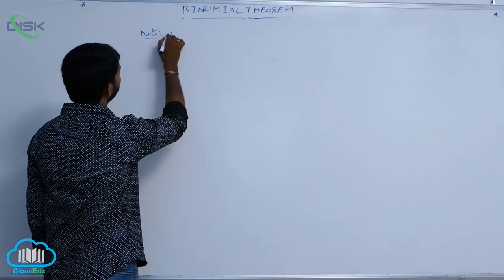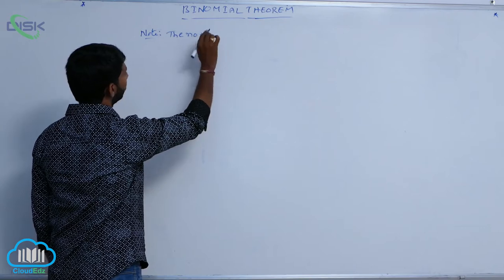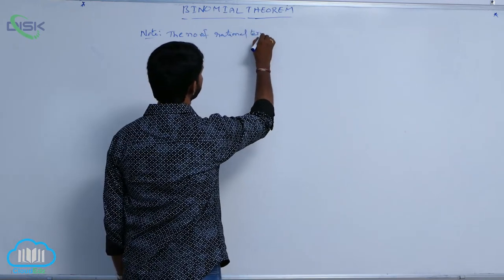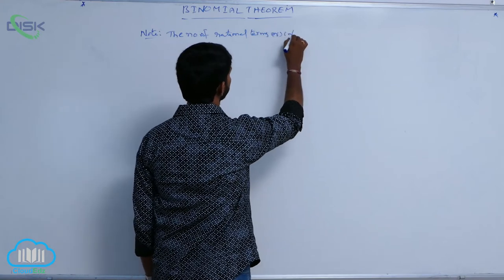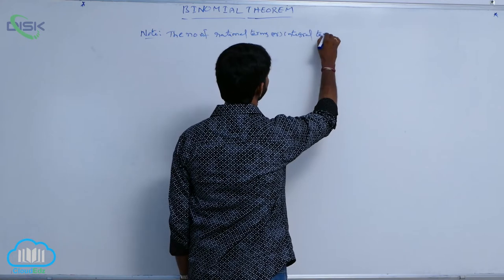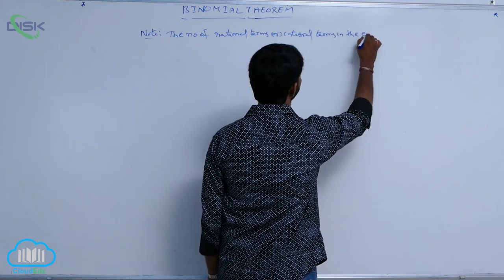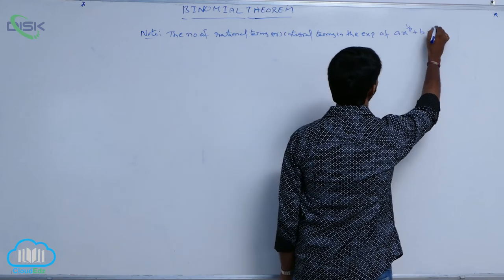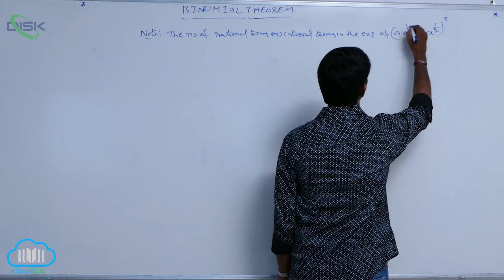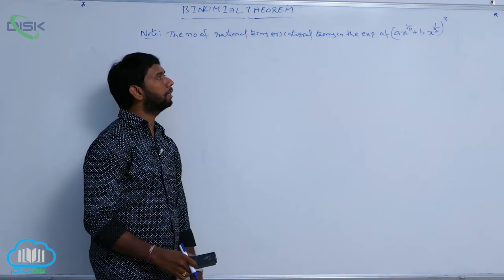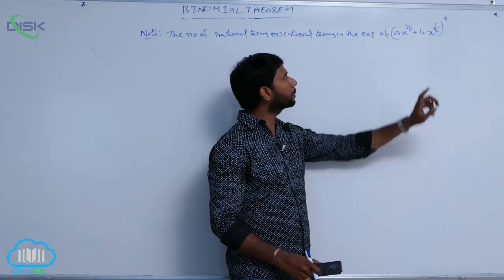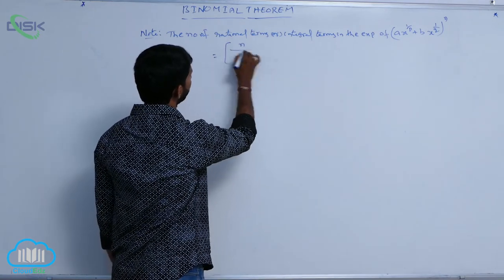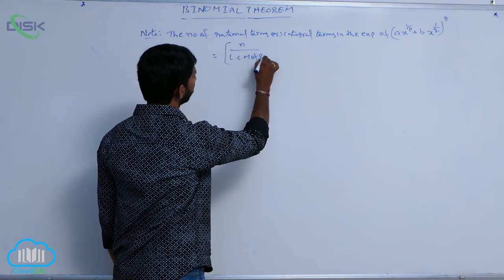Note: the number of rational terms or integral terms in the expansion of (a^(1/p) + b^(1/q))^n is equal to floor(n / LCM(p, q)) + 1.